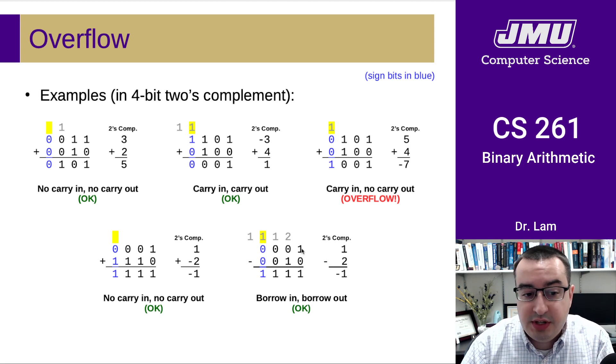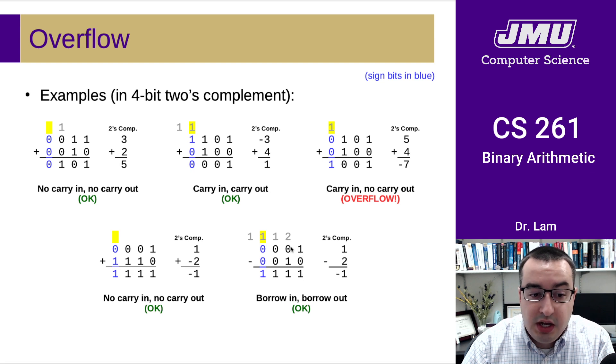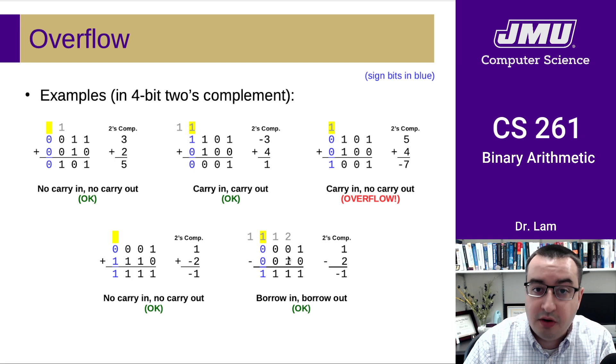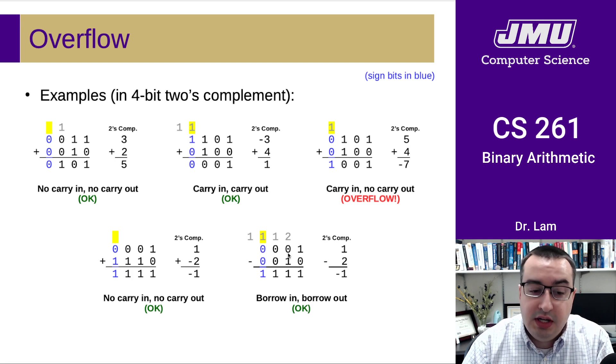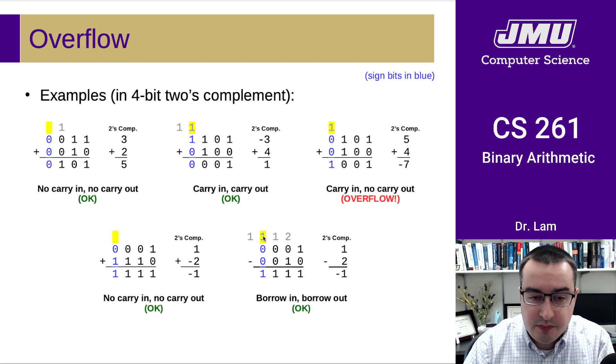So just like we do in decimal, we go digit by digit. So one minus zero is one. Here we don't have anything to subtract this one from. And so we have to borrow just like we would if we were doing this in decimal. And in fact, we don't have anything to borrow from here or here. So that means we have to borrow into the number. So we would borrow 10 into here.